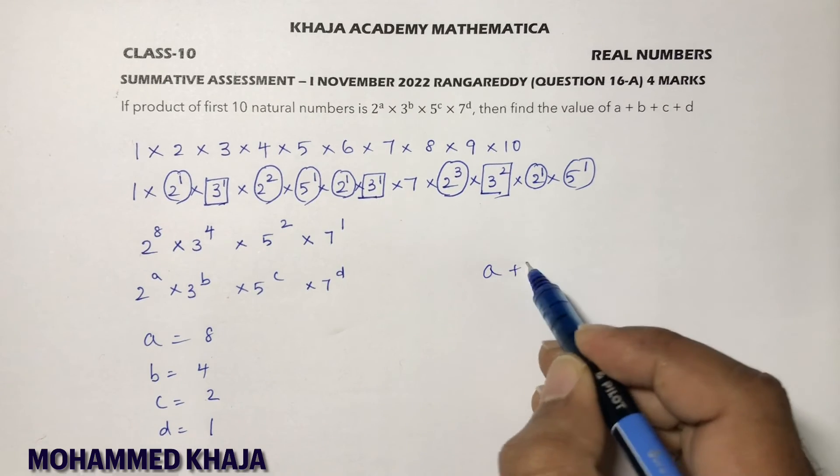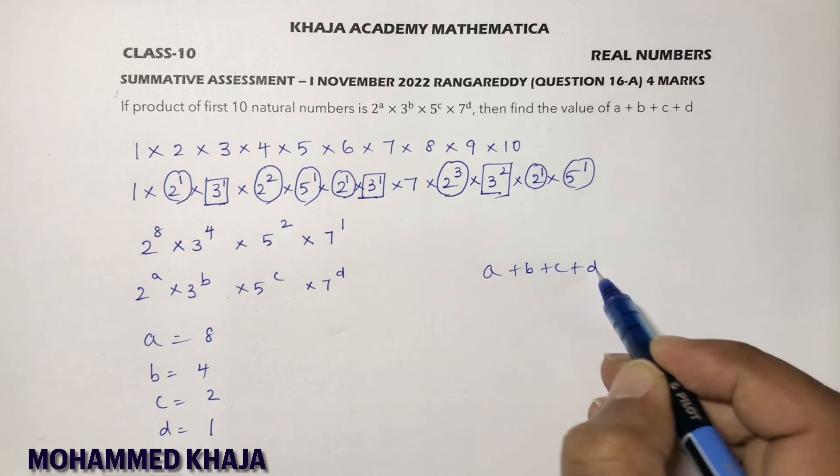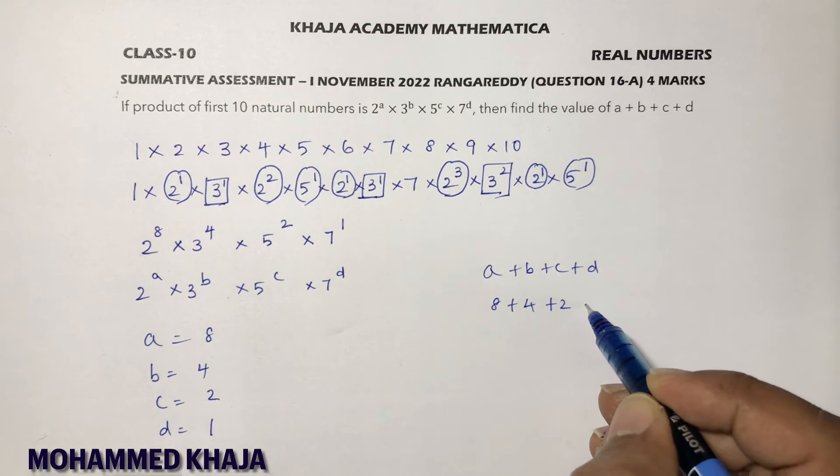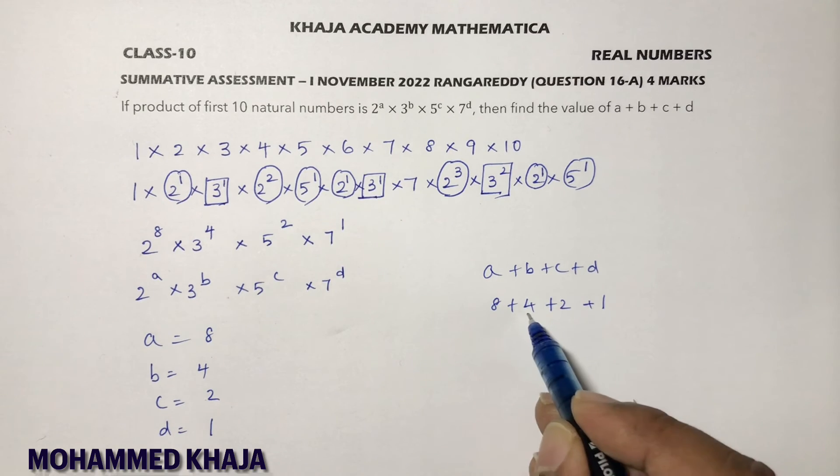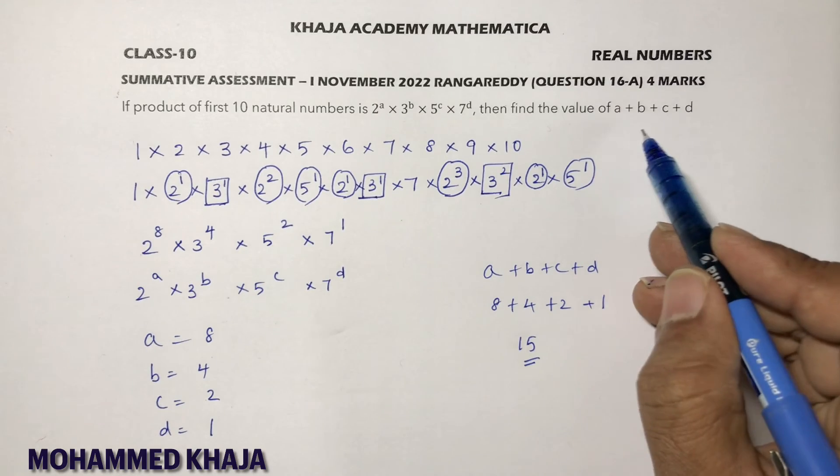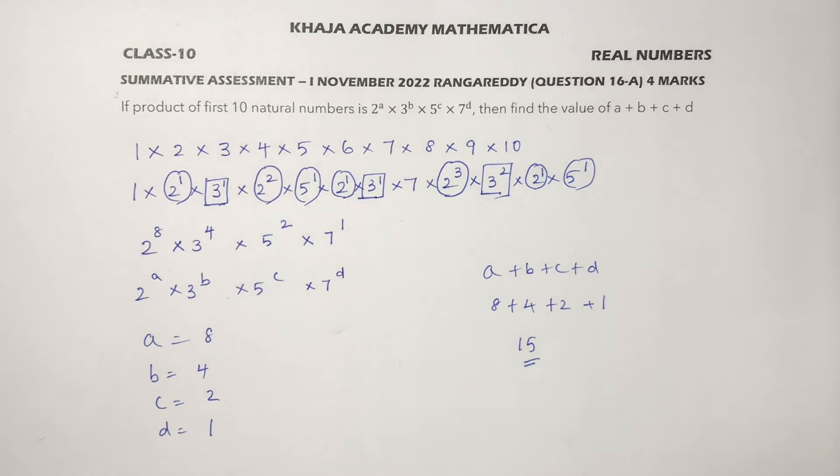They are asking a+b+c+d, so 8+4+2+1. 8+4=12, 12+2=14, 14+1=15. The value of a+b+c+d is 15.